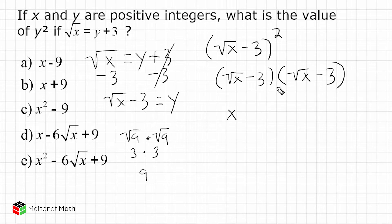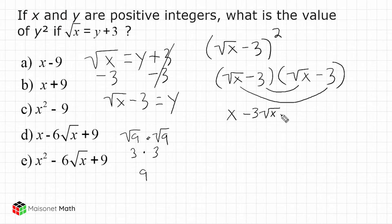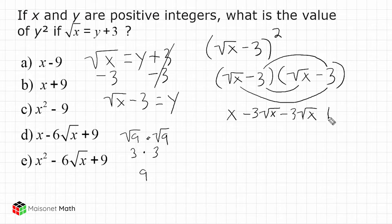Next, we take the outer terms and multiply them, then the inner terms and multiply them. We have negative 3 times the square root of x, which is just negative 3 square root of x — writing them next to each other indicates multiplication. We have the same two values for the inner terms, so we write minus 3 square root of x again. Finally, multiplying the last terms: negative 3 times negative 3 gives positive 9.